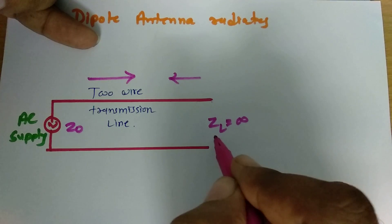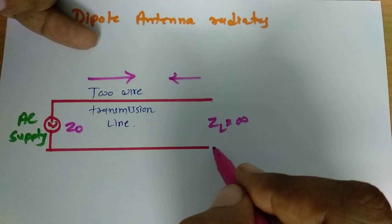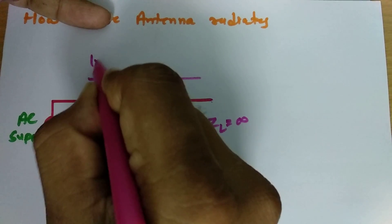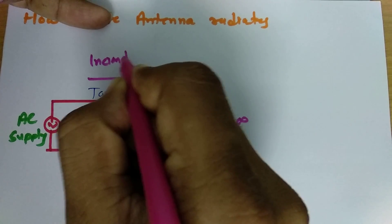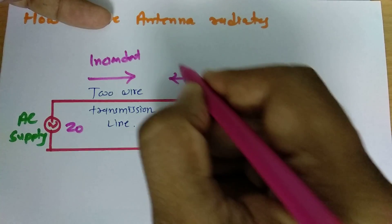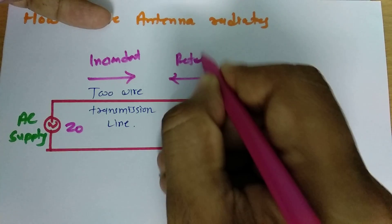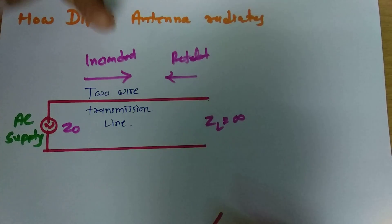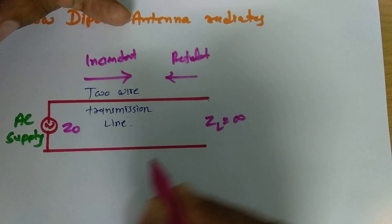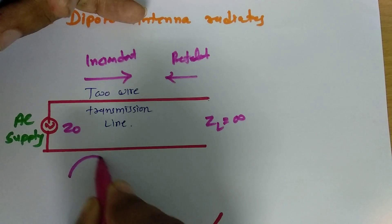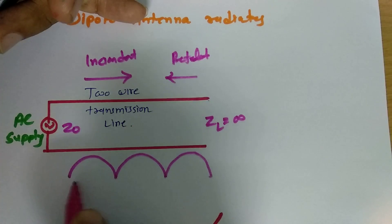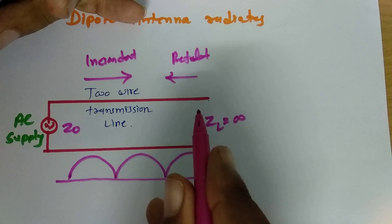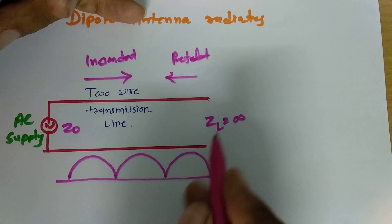Because there is no connection at the end, the signal is getting reflected. This incident signal and reflected signal together result in a standing wave pattern on the transmission line due to maximum reflection.